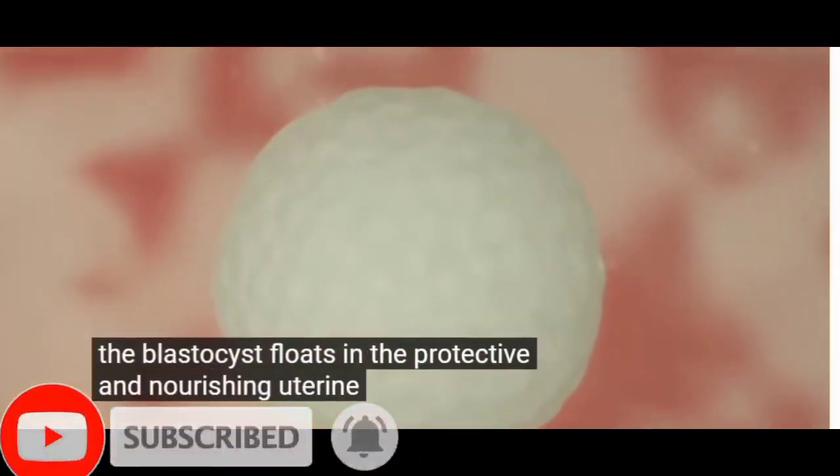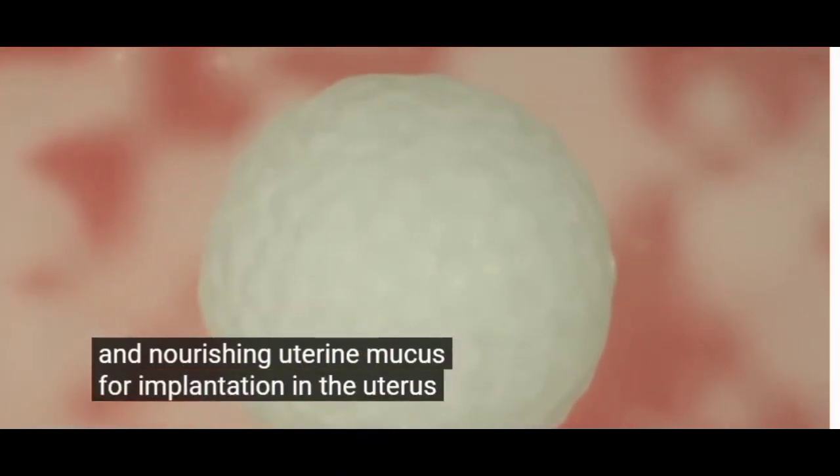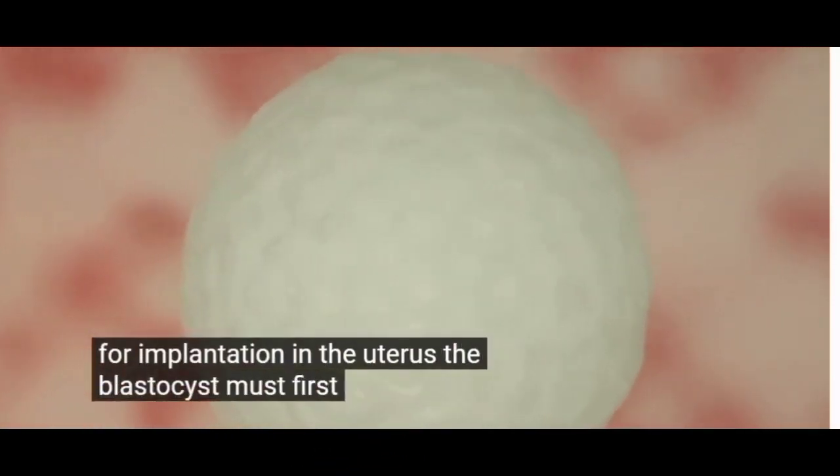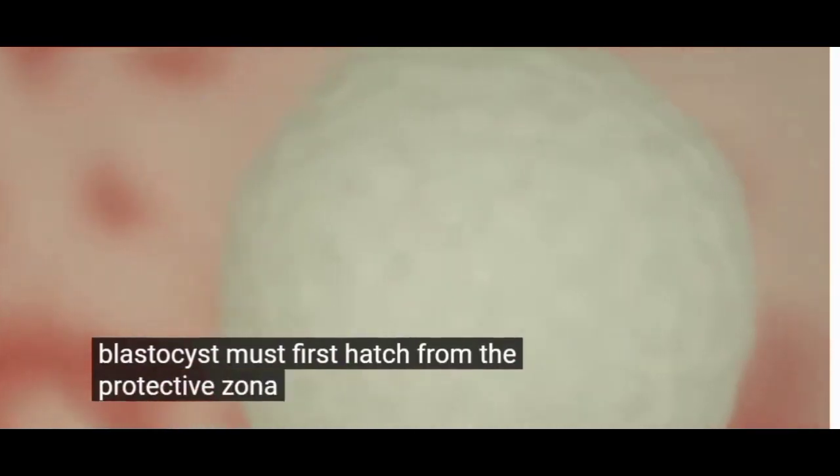The blastocyst floats in the protective and nourishing uterine mucus. For implantation in the uterus, the blastocyst must first hatch from the protective zona pellucida.